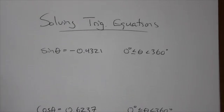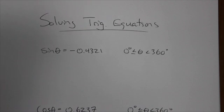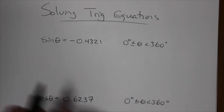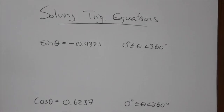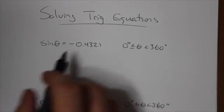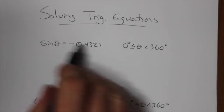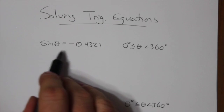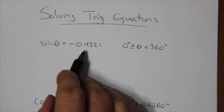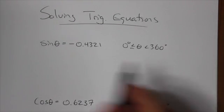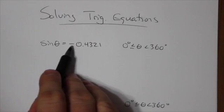Okay everybody, we're going to take a quick look at solving trig equations. I'm just going to do a couple really straightforward ones with you guys. First of all, when you take a look at an equation like this, sine of theta equals negative 0.4321, what we've got to look at first is the sine ratio.